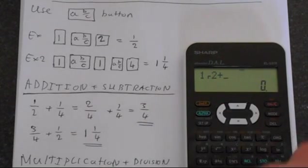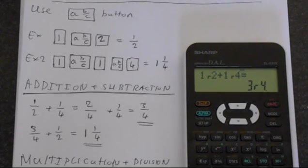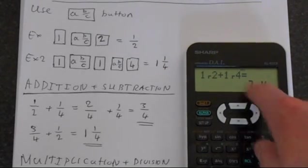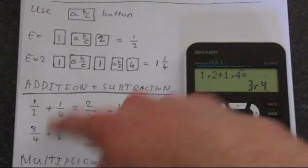And then plus 1, AB over C, and then 4, and that gets us a quarter. Now, this is the addition, you get 3R4, so that's 3 over 4. It's very simple.